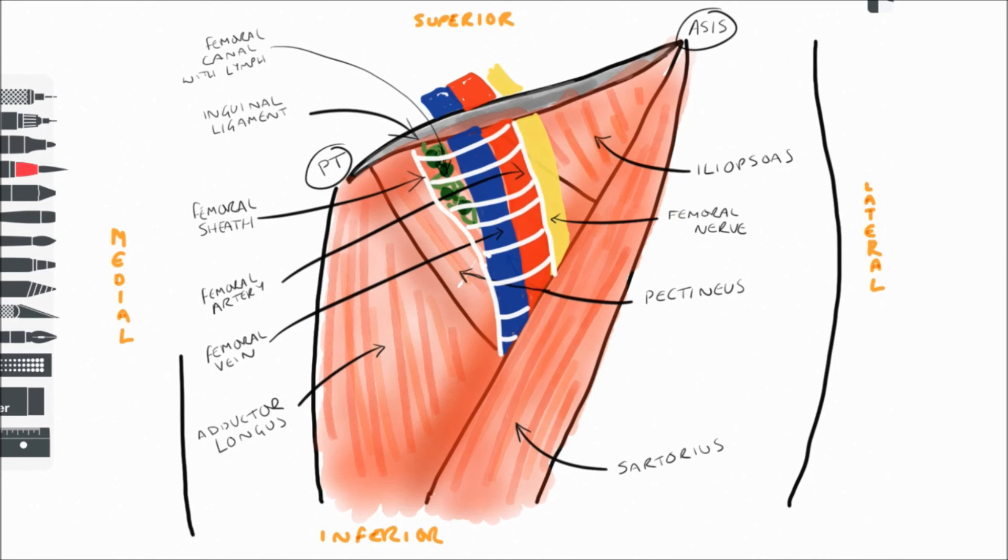It's also important that, although I haven't included them in this diagram, tributaries to the femoral vein and branches of the femoral artery—for example, profunda femoris—can also be found associated with the femoral triangle.